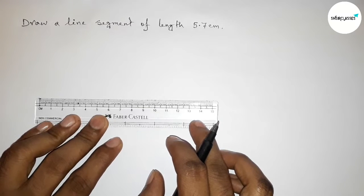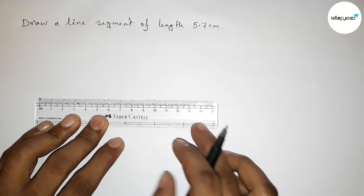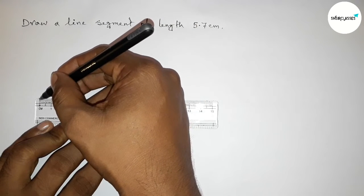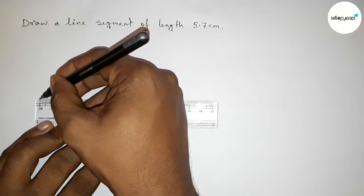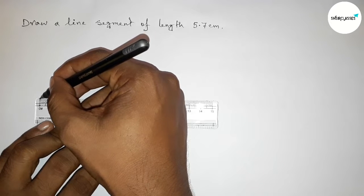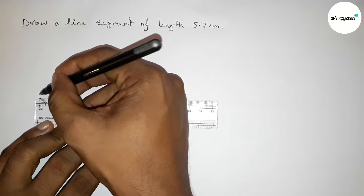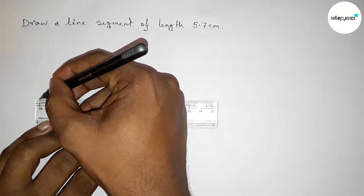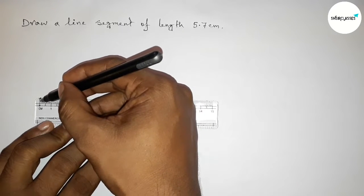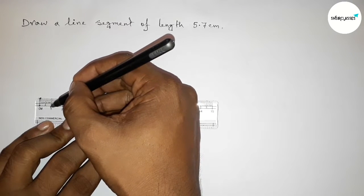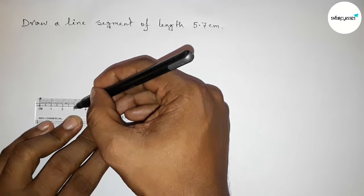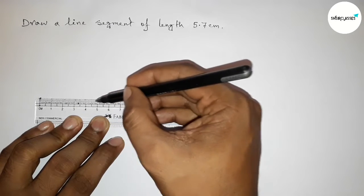First, with the help of a scale, we count 5.7 centimeters. This is the starting point — zero. So first marking here at zero centimeters. This is zero, this is one centimeter, two centimeters, three centimeters, four centimeters.